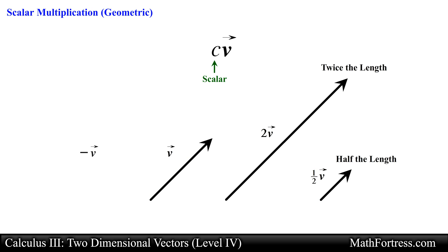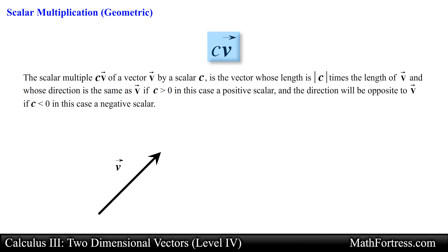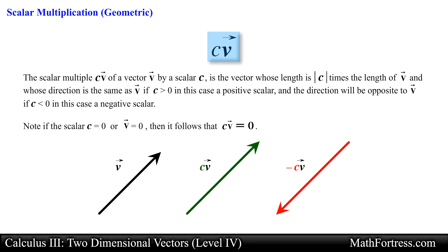A vector can also be multiplied by a negative scalar. Multiplication by a negative scalar forces the original vector to point in the opposite direction, denoted as negative vector V. It literally turns a vector 180 degrees in the opposite direction. In general, the scalar multiple of vector V by scalar C is the vector whose length is the absolute value of C times the length of vector V, and whose direction is the same as vector V if C is greater than 0. Note that if C equals 0 or vector V equals 0, then C times vector V equals 0. Real numbers essentially work like scaling factors, which is why they are conveniently referred to as scalars.